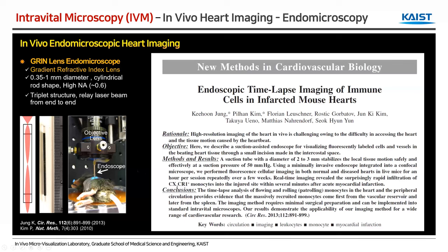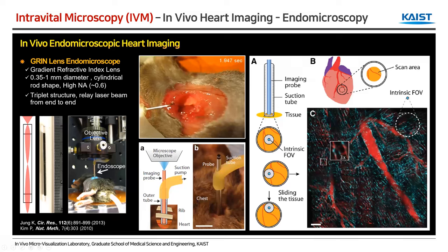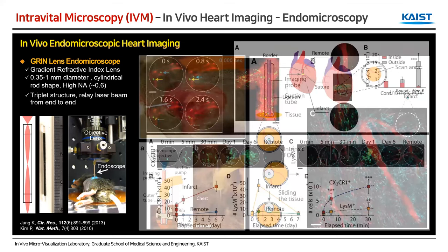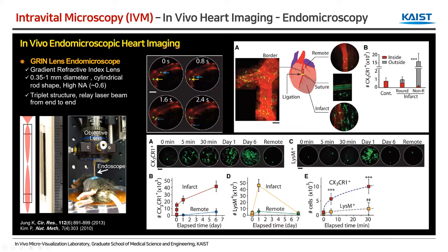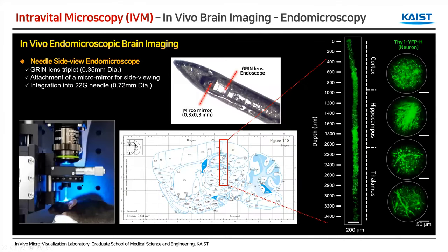We also have an endomicroscopy option — a needle-like probe with a diameter of around 1 millimeter. This endoscopic imaging probe can be inserted through small openings. For example, we insert it through the rib bone to image the heart after myocardial infarction at 30 minutes, day 1, and day 6, observing differences in cell number and distribution. It can also be used for colon imaging, or inserted directly into solid organs like the brain to observe cell distribution up to several millimeters deep.